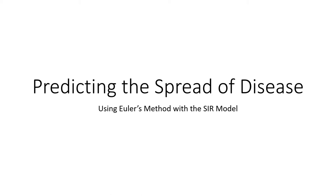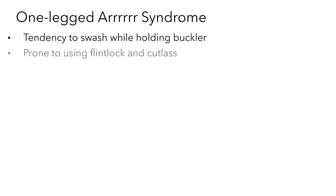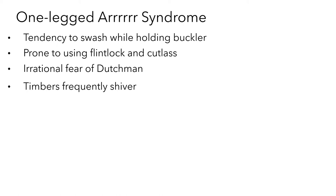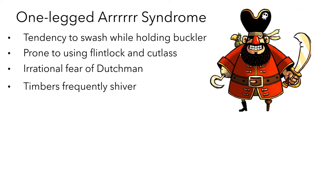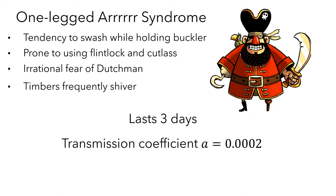In this video, I'll show you how to use Euler's method to predict the spread of disease for the SIR model. Let's imagine that there is a new disease going around called the one-legged R syndrome. It has several symptoms that result in the infected person either recovering or setting sail in search of buried treasure. The infection runs its course in three days and, based on data collected by the CDC, the transmission coefficient is equal to 0.0002.